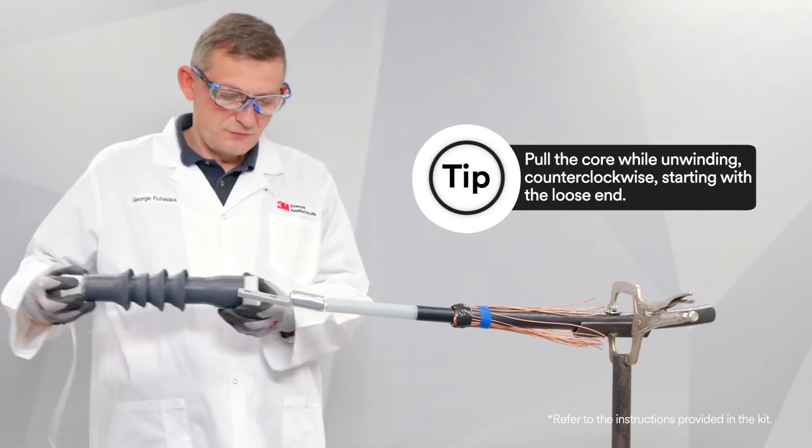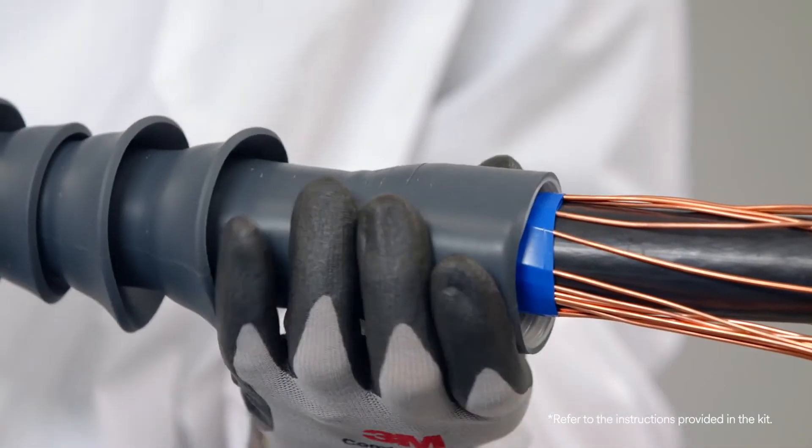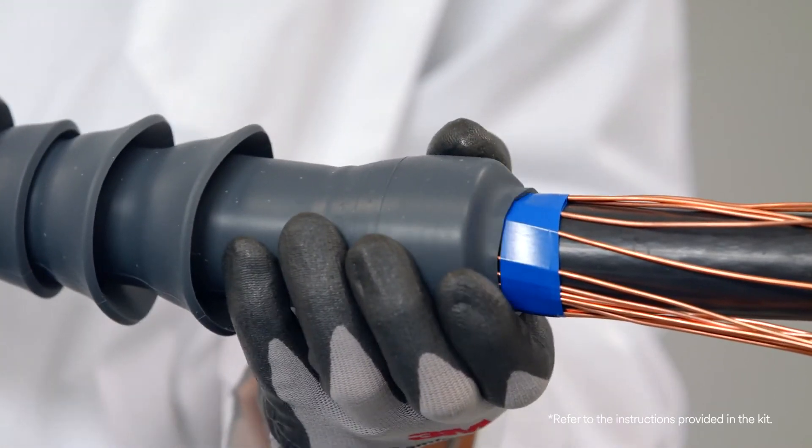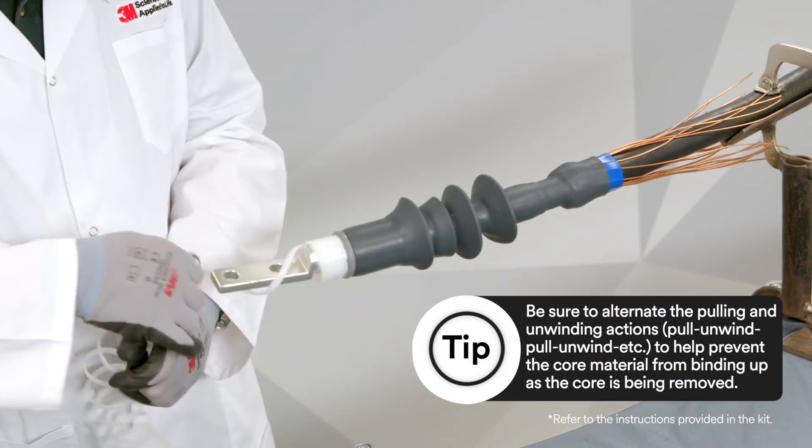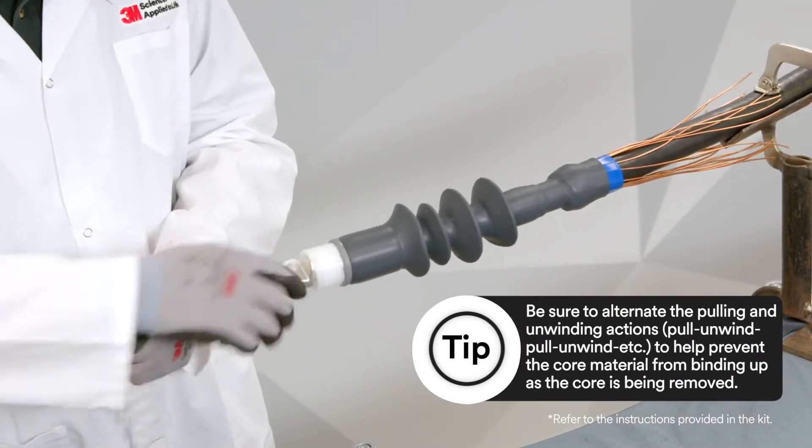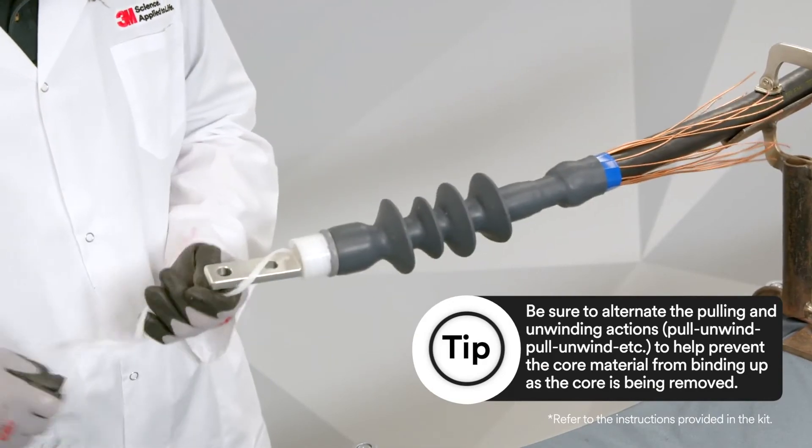Then slide the termination body onto the cable so it aligns to the edge of the marker tape and remove the core. Make sure the termination body, not the core, is right at the edge of your marker tape.